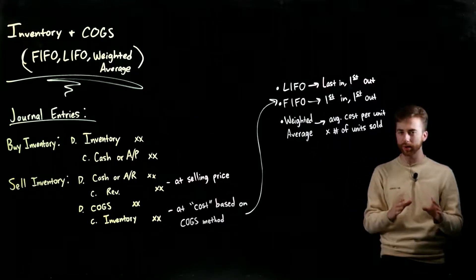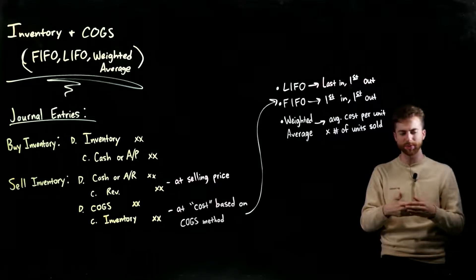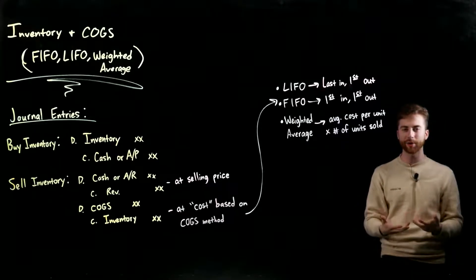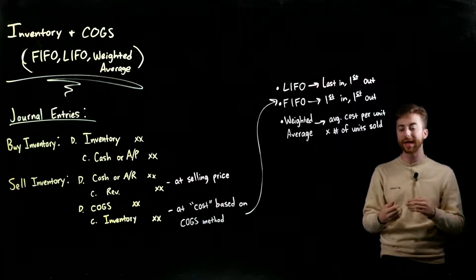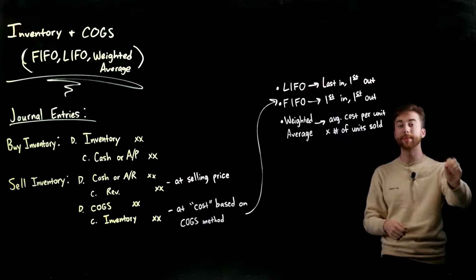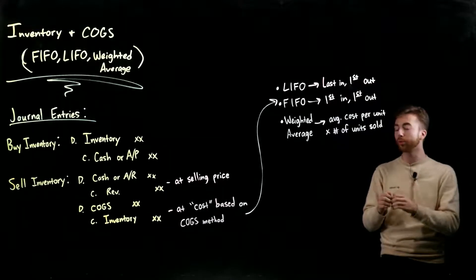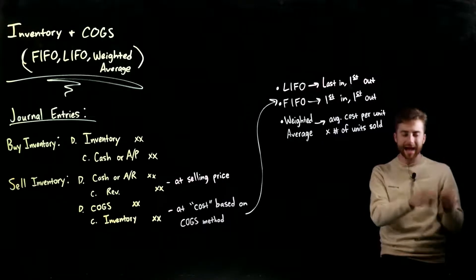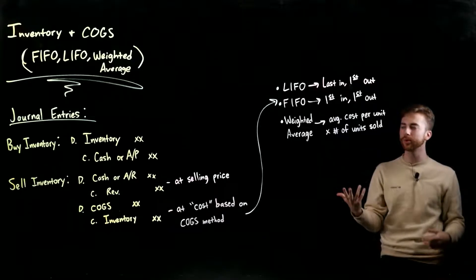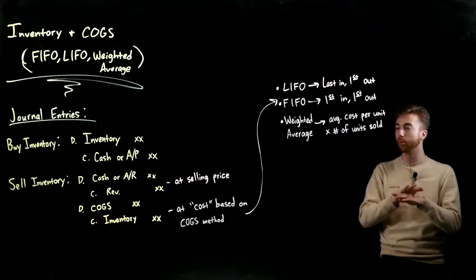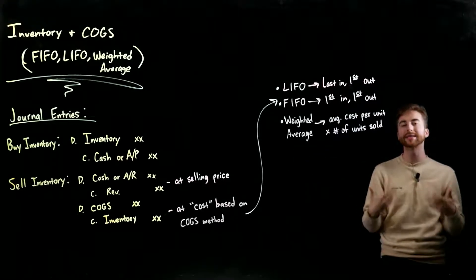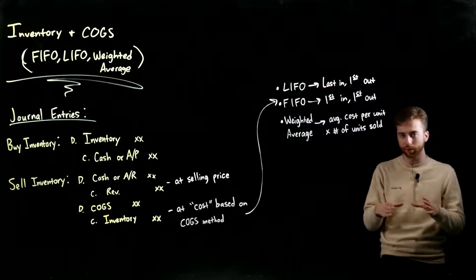Notice we don't record an expense when we buy inventory, which seems a little weird. In financial accounting we're dealing with the matching principle: revenues aren't recognized until we earn them, and expenses aren't recognized until we've received the benefit of what we purchased. We didn't get the benefit from buying that inventory until we sell it, because the whole point of buying inventory is to sell it to a customer.